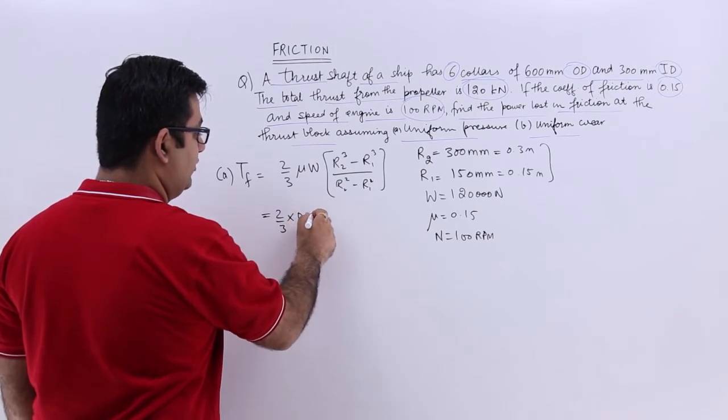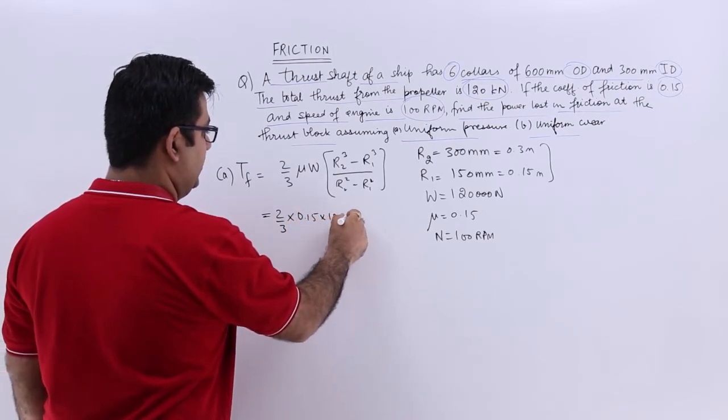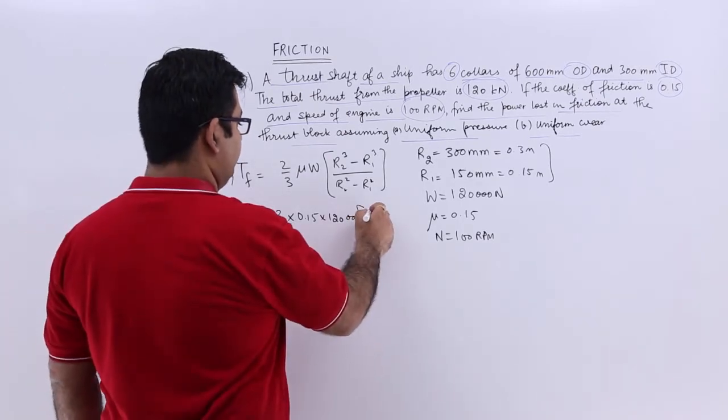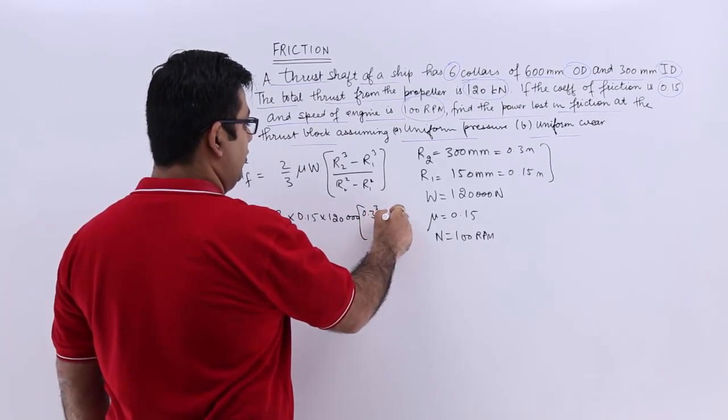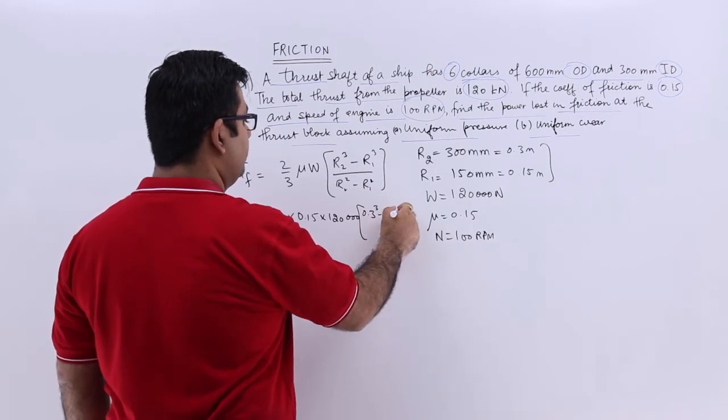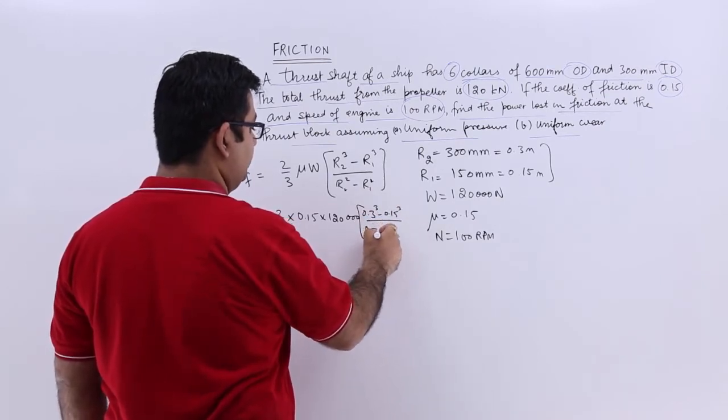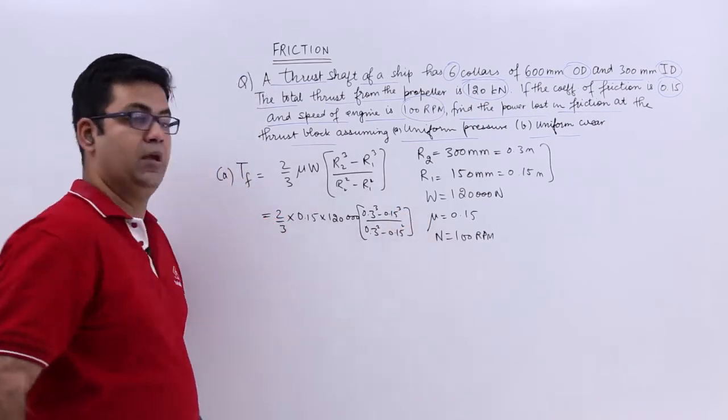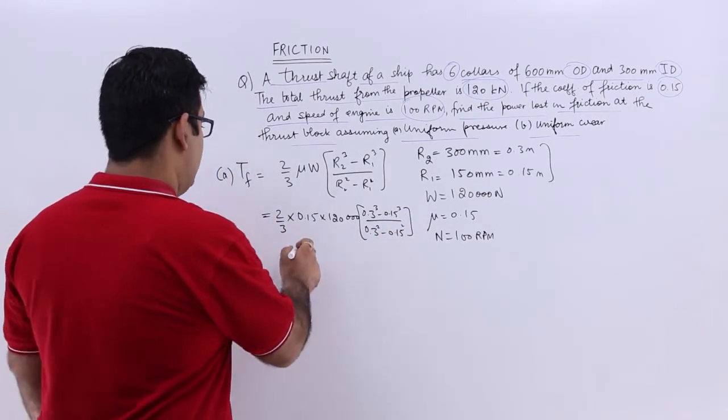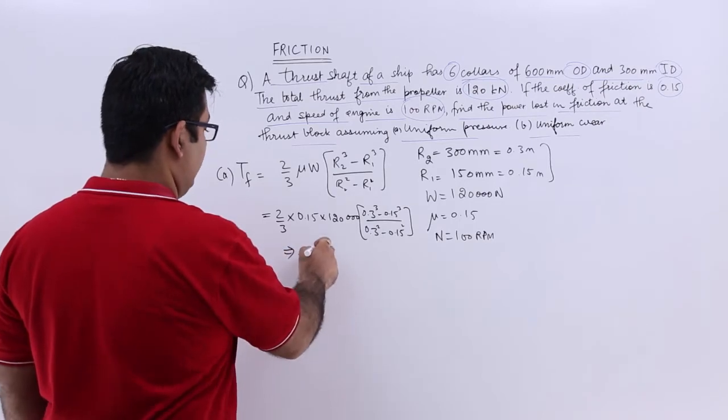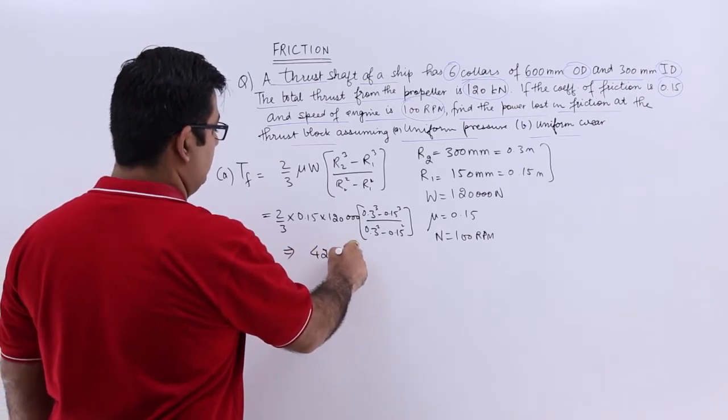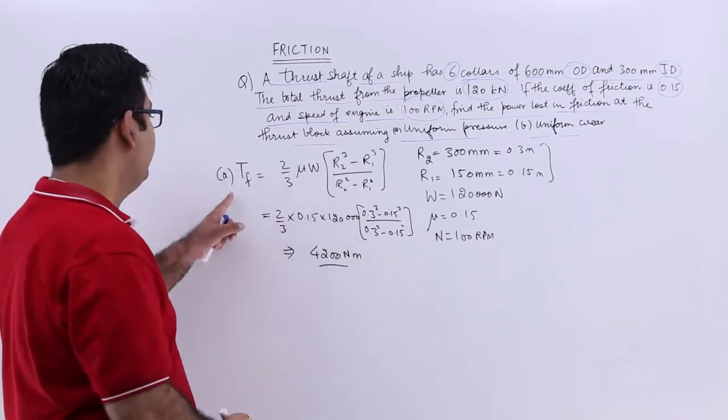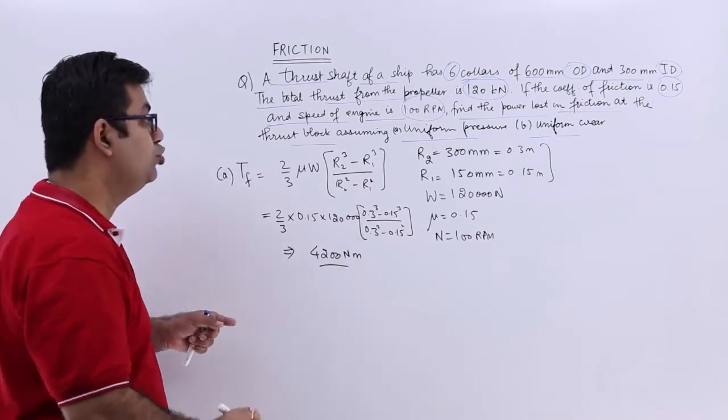Just plug in the values: 0.15 into 0.3 cube minus 0.15 cube upon this minus this. The answer comes out to be 4200 newton meters. That's the torque lost in friction or to overcome friction.